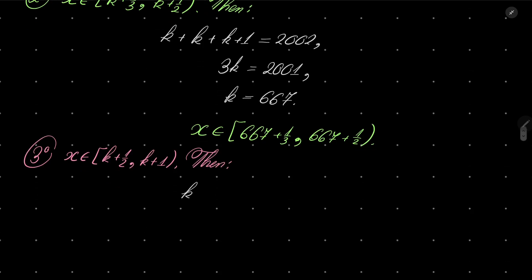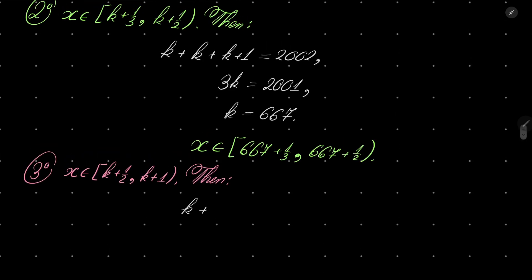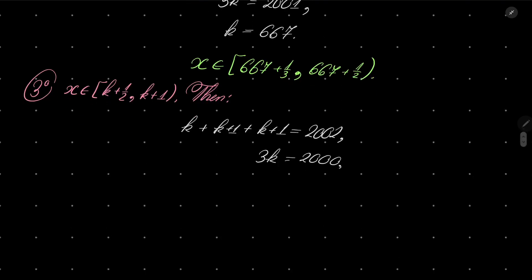Floor of x is k. Floor of x plus 1/2 is k plus 1 this time, and floor of x plus 2/3 is again k plus 1. And that means that 3k should be equal to 1000, which again is impossible. No integer k satisfies that.